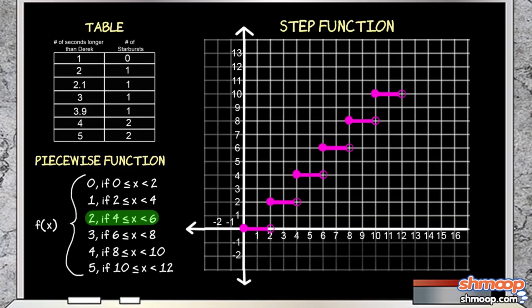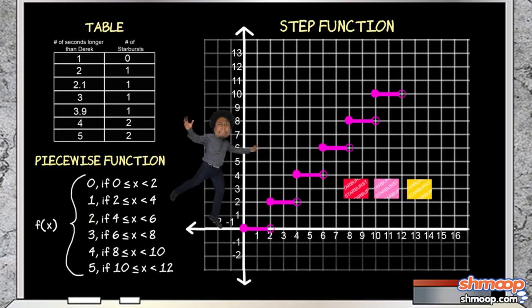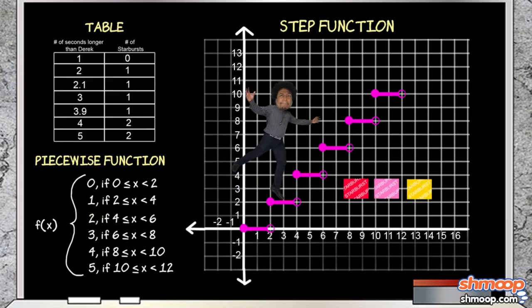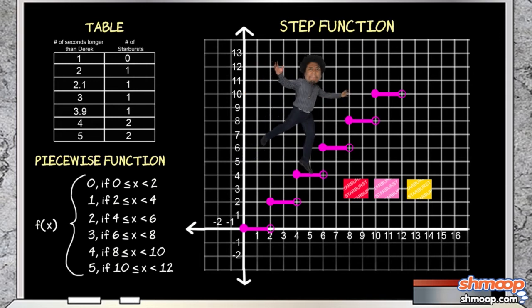As soon as you pass that 4-second mark, you immediately move up the chain of command and get 3 Starbursts. Notice there wasn't a transition time when you got 2 and a half Starbursts. You just jumped...or should we say stepped...straight to the next whole number.